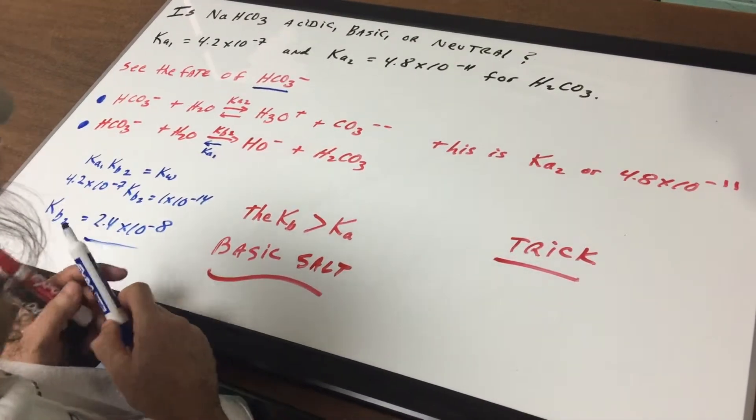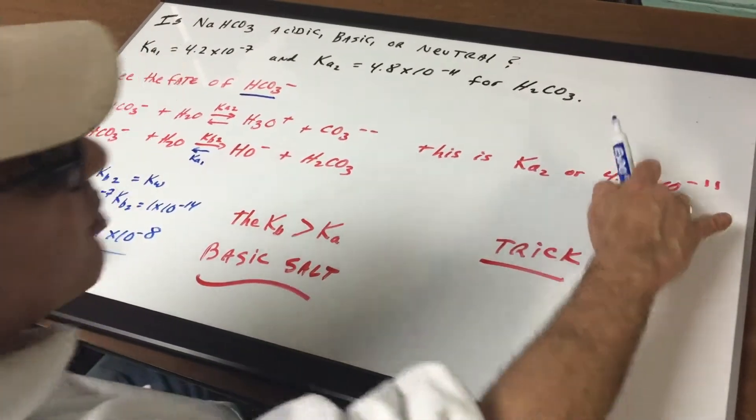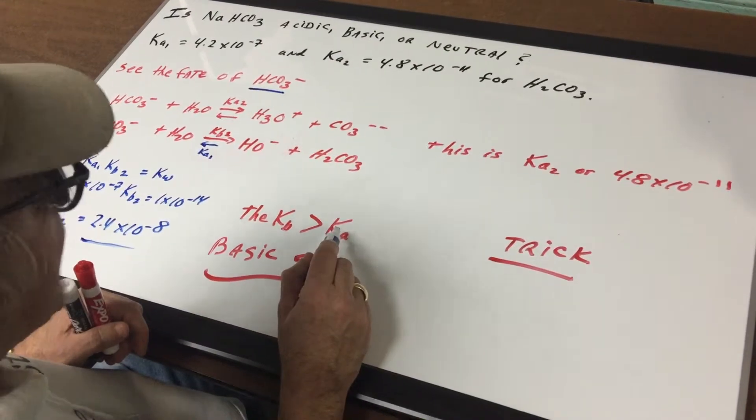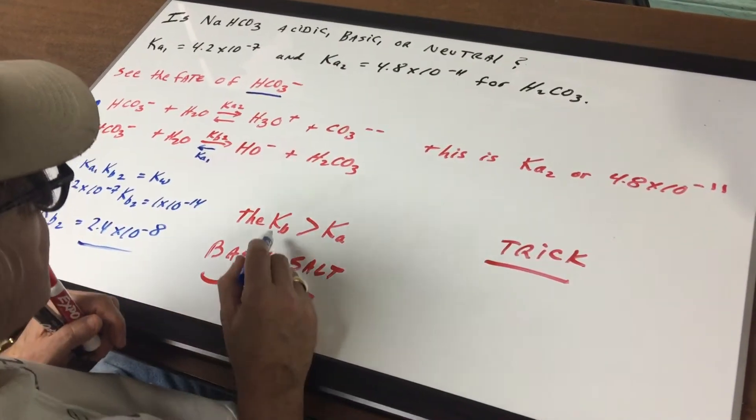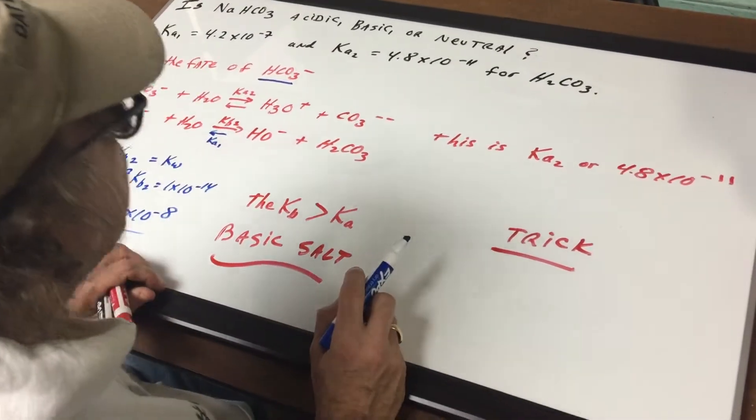So what we're going to do is we're going to compare that KB2 with the Ka2 from this step, and since the KB exceeds the Ka, that means the salt would be basic. That's the way you would do it mathematically.